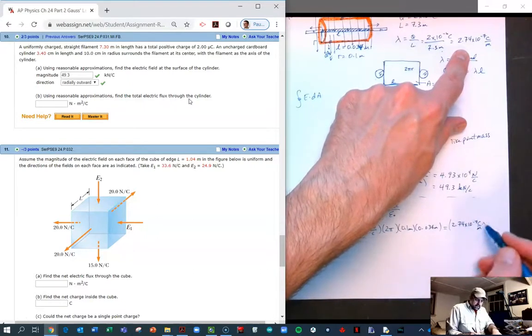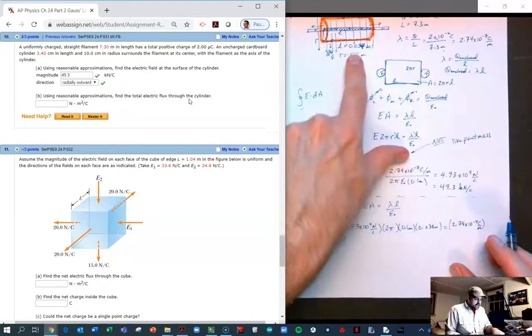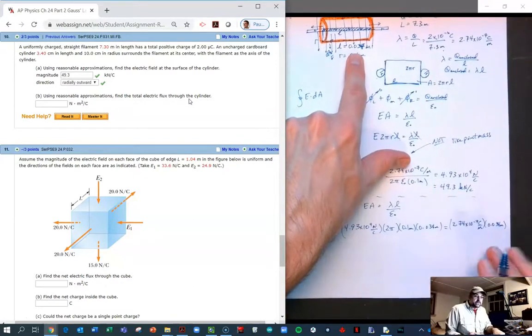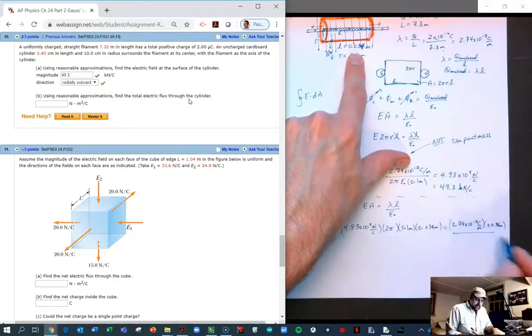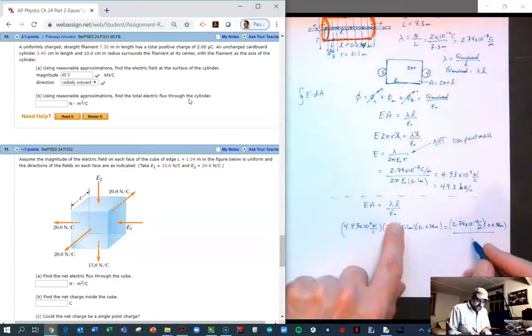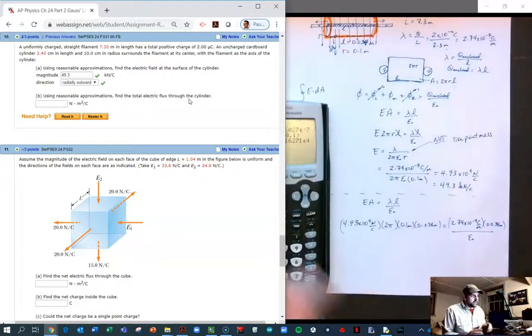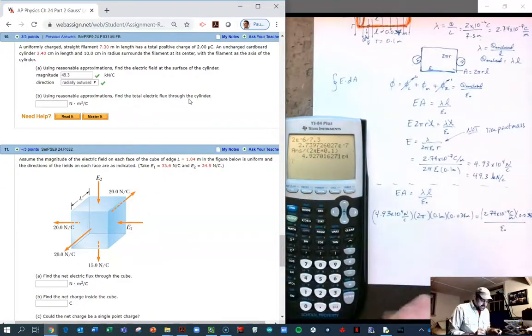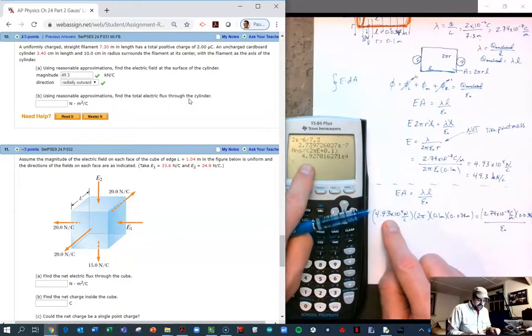Let's see what the right-hand side is. This is going to be lambda, which we calculated, times l, which again is 0.034 meters, and then we divide that by epsilon naught.